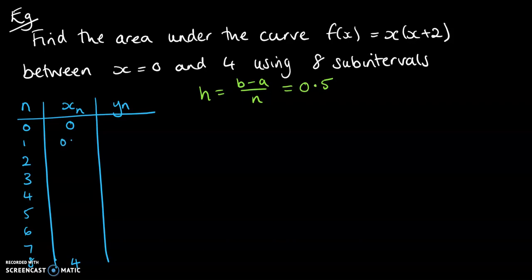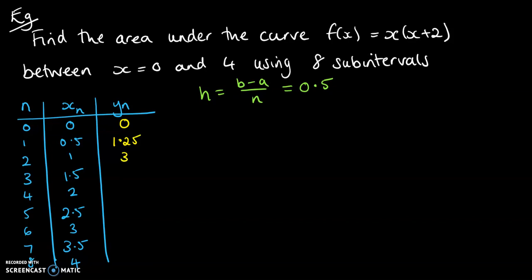So four divided by eight means we are going up in halves. So we will have over here in our table, 0.5, one, 1.5, and so on. Next, we work out our Y values by putting them into the function. So if X is zero and we do zero times zero plus two, Y will also be zero. If we put in 0.5 times 0.5 plus two, we get the answer of 1.25. Next is to put in a one. One times one plus two, so that's one times three, that's going to be three. And we carry on working out all of those Y values.